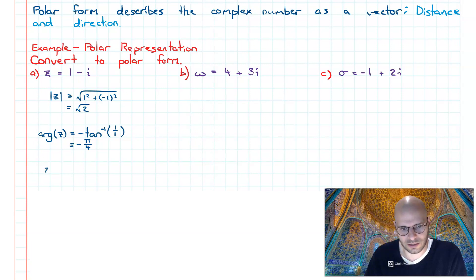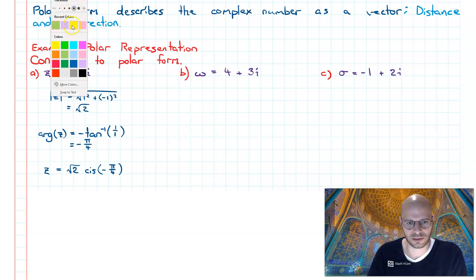So writing this out in its polar form, z can be represented as root two cis negative pi on four. So that's our first example.